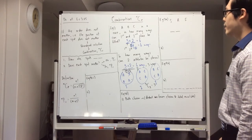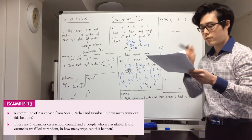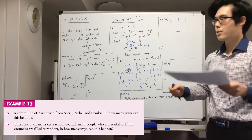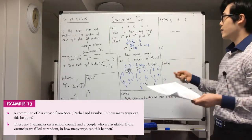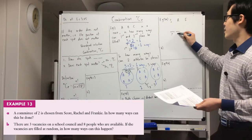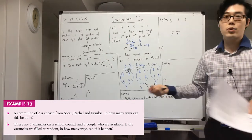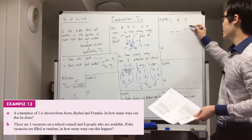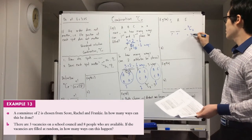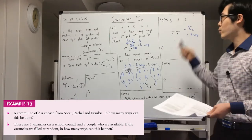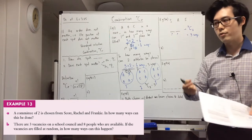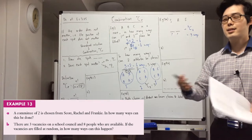Example 13A: a committee of two is chosen from Scott, Rachel, and Frankie. In how many ways can this be done? I've drawn two spots because committee of two. You're just choosing any two people from three people. Does each spot matter? No — you're just getting two people in any order, it's just a committee. So that's 3C2, which gives three ways. A similar question where each spot would matter would be: two people chosen, one for captain and one for vice captain — that would be permutation.